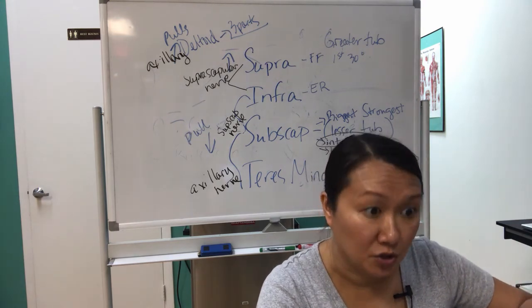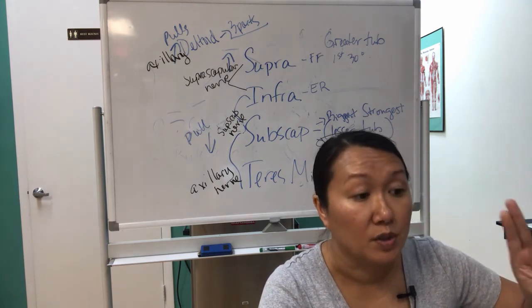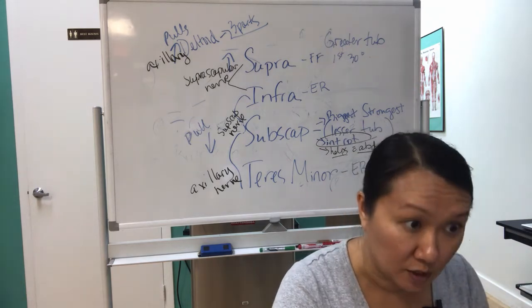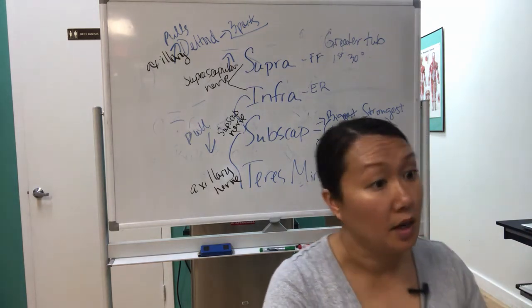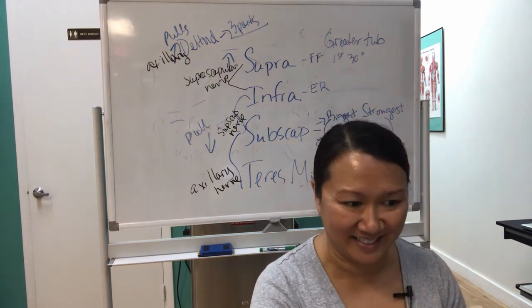The infraspinatus and the teres minor do external rotation, whereas the subscap does internal rotation. So if that's one of the questions, and the question is all about external rotation, then subscap is out, right?